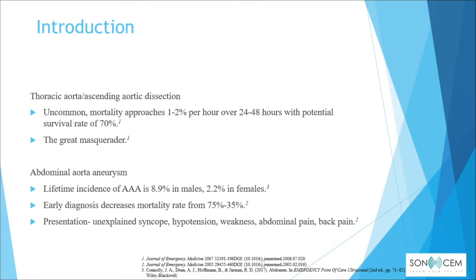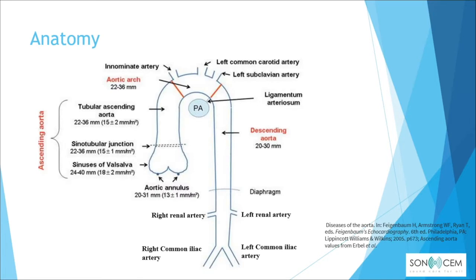For abdominal aortic aneurysm, the lifetime incidence of AAA (triple A) is 8.9 percent in males and 2.2 percent in females, based on a 2015 United States study. Early diagnosis of triple A decreases the mortality rate from 75 percent to 35 percent. Patients may present with unexplained syncope, hypotension, weakness, abdominal pain, and back pain — most commonly low back pain.